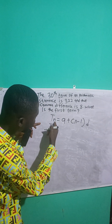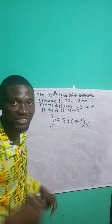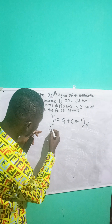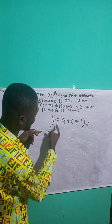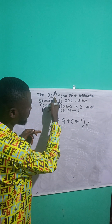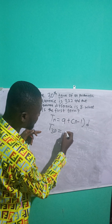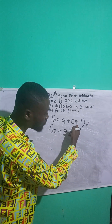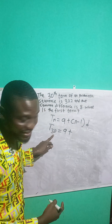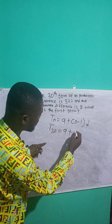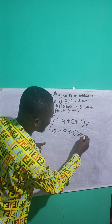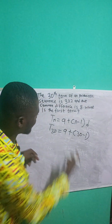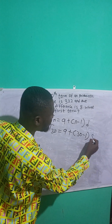So this is going to be t. I'm replacing n with 30 because 30 is the number of terms. So it will be t30. I will replace n with 30. It's equal to a, which is the first term, plus n — which is also 30 — minus 1, times d. d is the common difference, and the common difference here is 8.